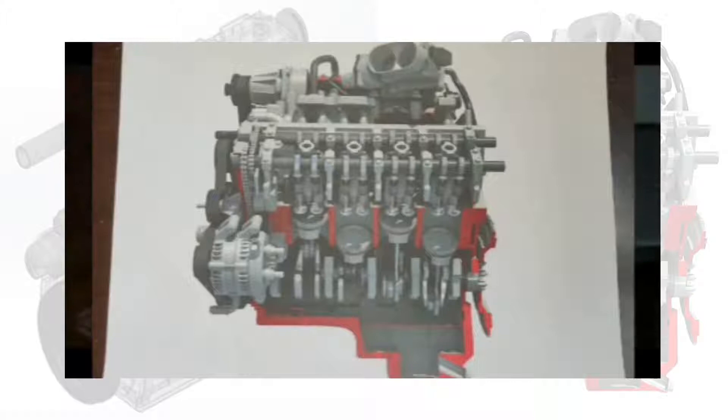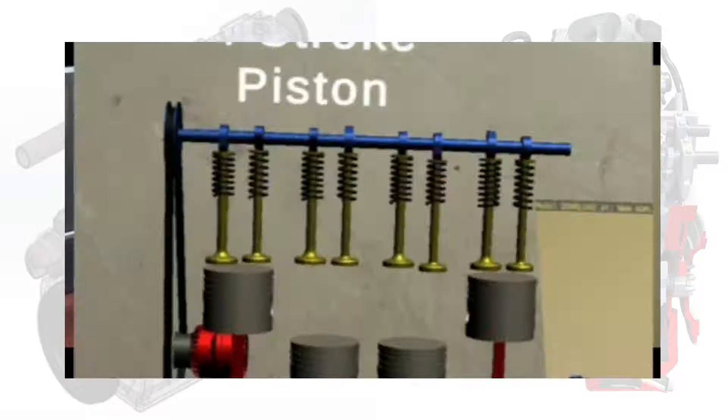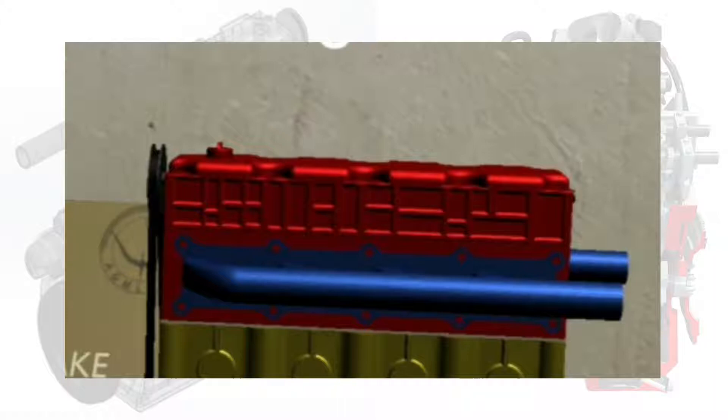The user must face the camera toward the Cars Engine. Since this is a demonstration phase, we use a printed image of the Cars Engine. Once the system has detected the image, the user should see two 3D virtual designs of the Cars Engine — the left one is the interior part of the engine, while the right one is the full cover of the Cars Engine. There will also be a video presentation about the Cars Engine placed between the two 3D virtual designs.